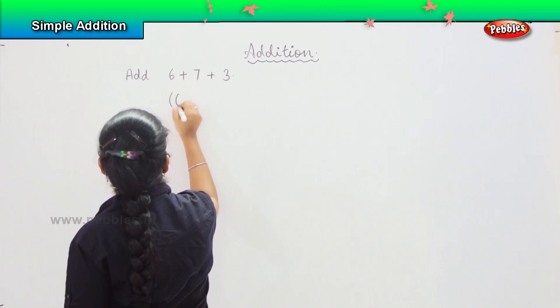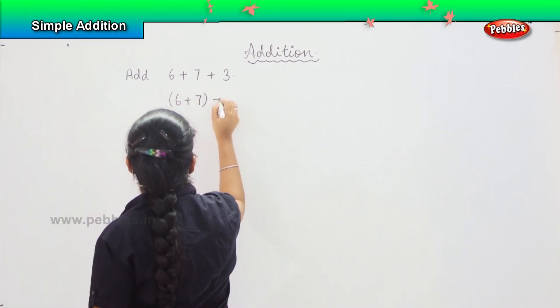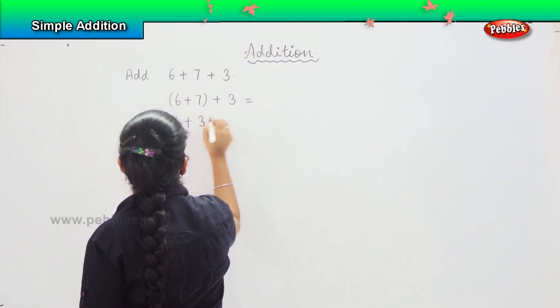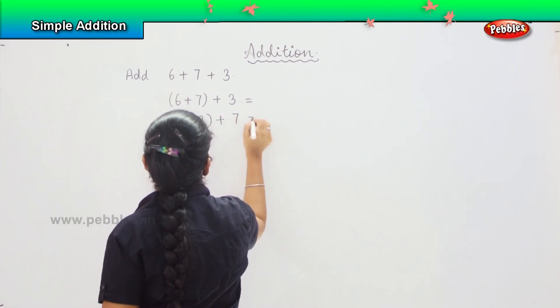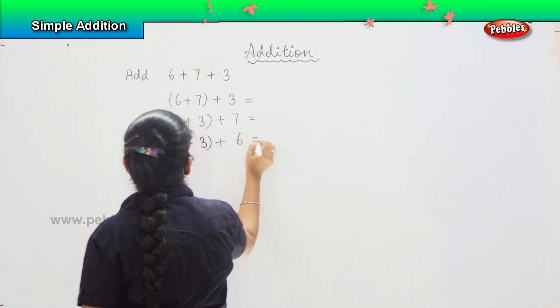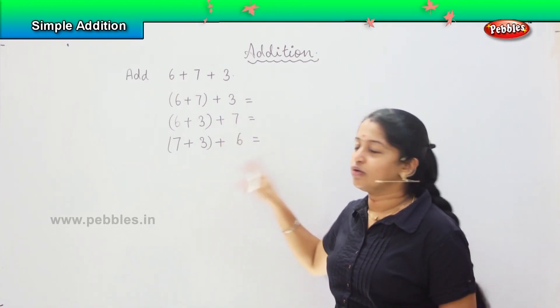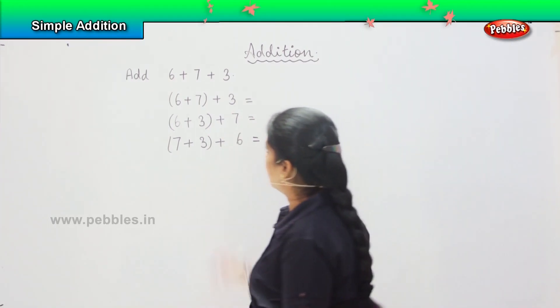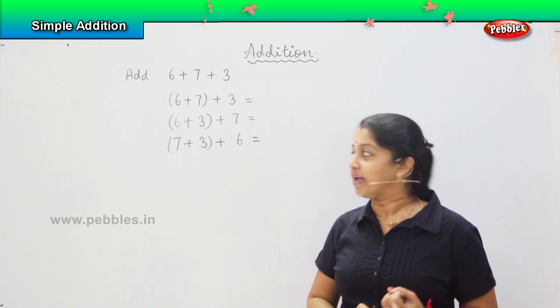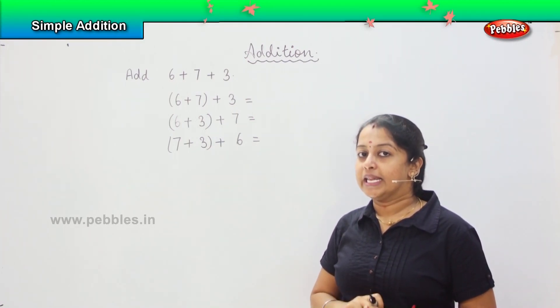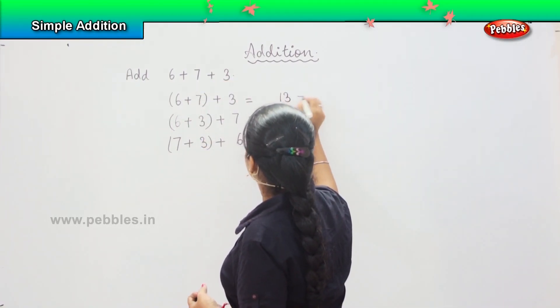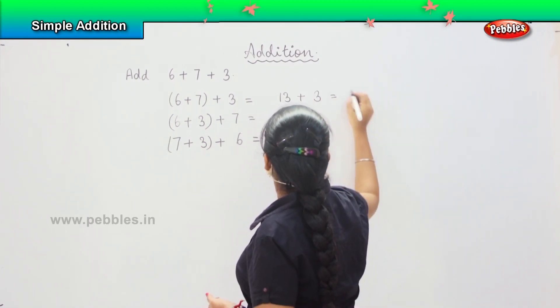So either we can take as 6 plus 7 plus 3, or we can take 6 plus 3 plus 7, or you can take 7 plus 3 plus 6. Whichever way we are going to regroup, our answer will remain the same. So shall we do the first one, 6 plus 7. After 6, count the next 7 numbers: 7, 8, 9, 10, 11, 12 and 13. So the total of 6 plus 7 is 13. 13 plus 3 is 16.